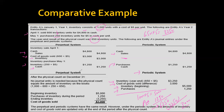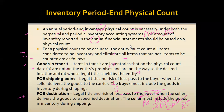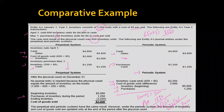In the perpetual system, we apply the same formula: beginning inventory + purchases − ending inventory = cost of goods sold. That covers all the inventory fundamentals and inventory accounting systems. I hope you find this video useful for your studies. Thank you very much.